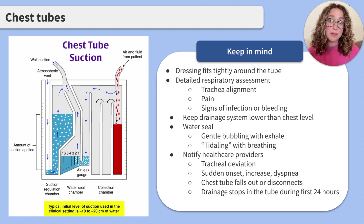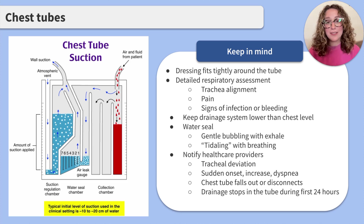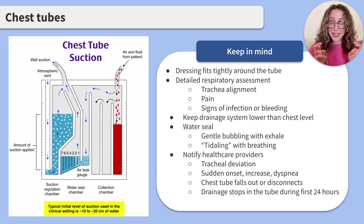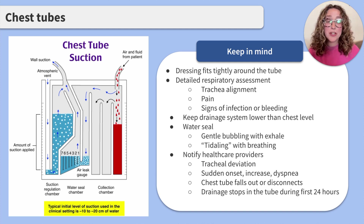If the drainage system is a water seal chamber, there should be a gentle bubbling when the client exhales, coughs, or changes positions. If there is excessive bubbling, this can be a sign of an air leak. It's also important to assess for tidaling, or the rise and fall of water in the second chamber with breathing. You'll want to monitor the chest tube for drainage every hour for the first 24 hours, and make sure there are no loops or kinks in the tubing.